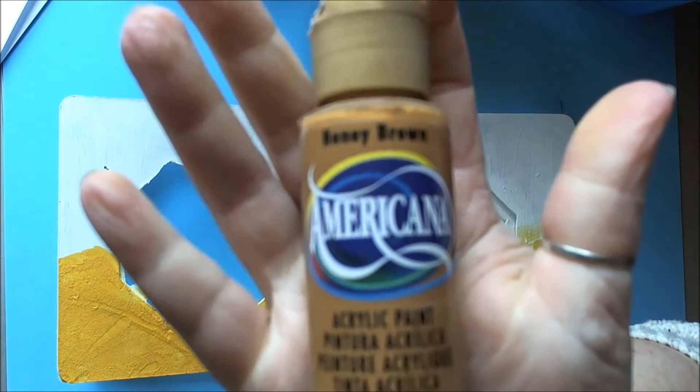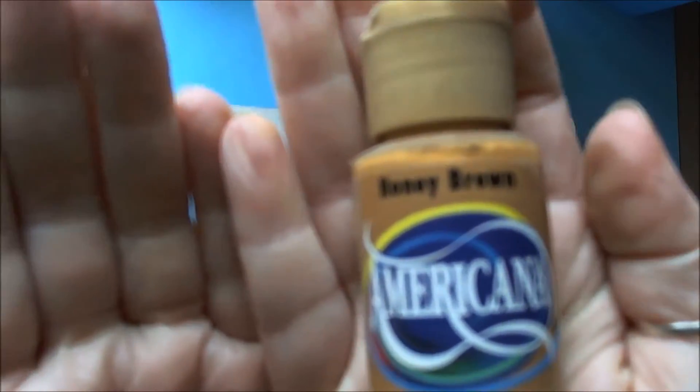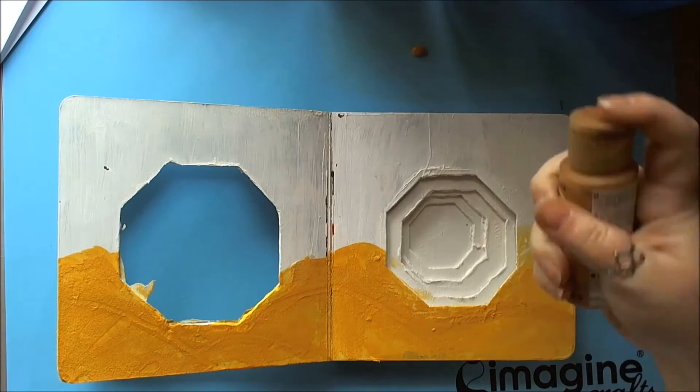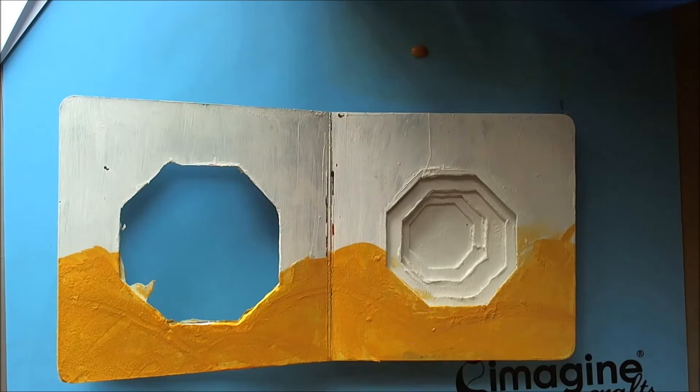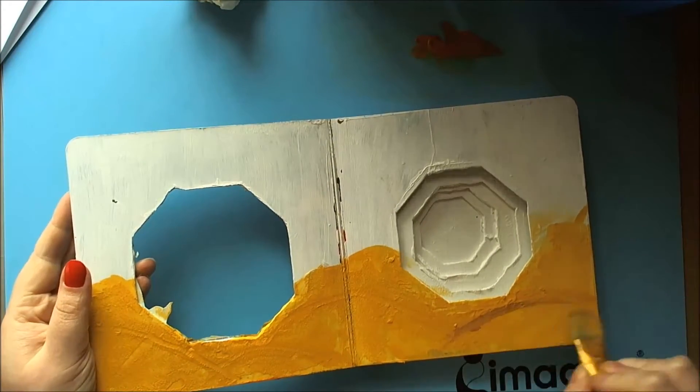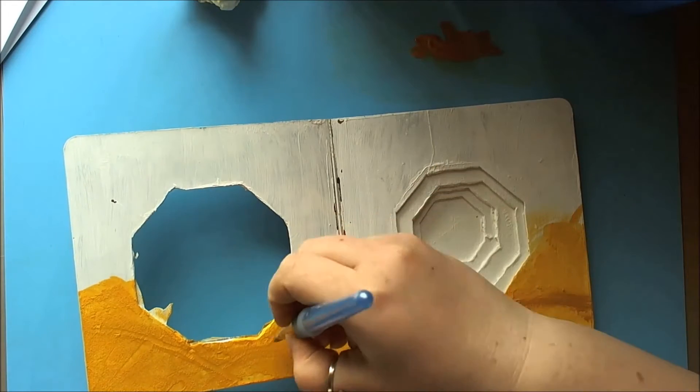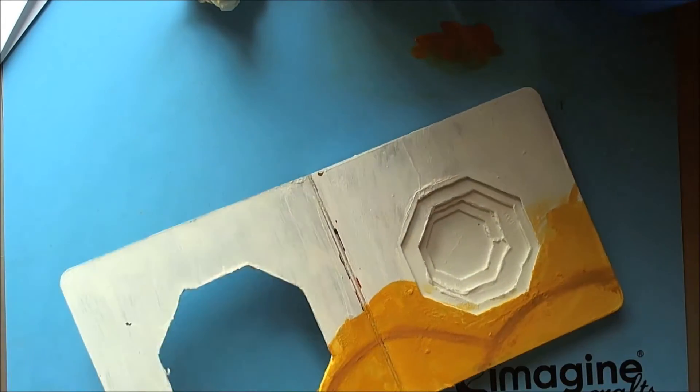To add a bit of definition into the sand dunes, I'm going to use the Honey Brown in the Americana, again DecoArt, and I'm just going to basically dry brush it on. I'm just going to add in a bit of highlighting texture so the sand dunes actually pop out. I didn't like the way that it looked all just flat one color.